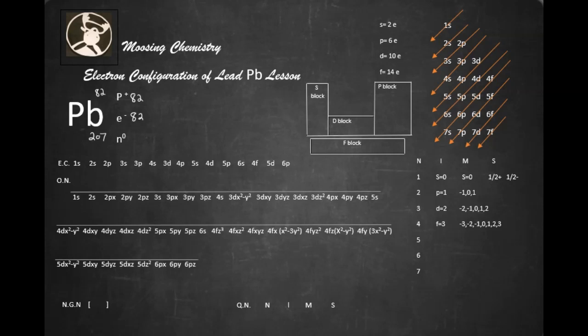Now, neutrons is the atomic mass unit, which is 207 minus 82, and that would give me 125 neutrons.